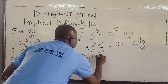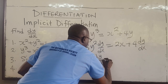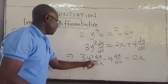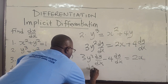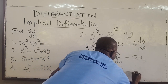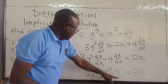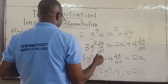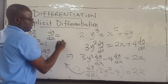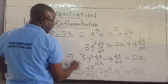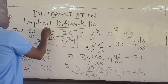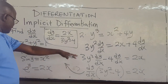From here, I have 3y squared dy/dx minus 4 dy/dx equals 2x. Factoring out dy/dx gives: dy/dx times (3y squared minus 4) equals 2x. Dividing by that factor, dy/dx equals 2x over (3y squared minus 4).